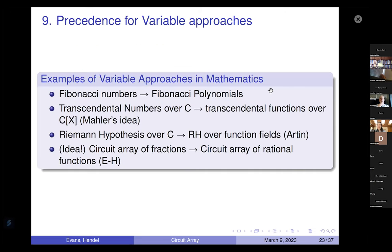We were looking at number patterns and recognized two-thirds, 26 over 27, 242 over 243, then 13 over 12 and 121 over 120. We were excited, but the next row took us two years to figure out — the numbers weren't giving anything. The idea is to use a variable approach. One example: the Fibonacci numbers also have Fibonacci polynomials, and sometimes the polynomials are easier to prove relations with than the numbers.